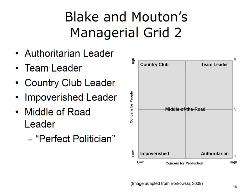In the very center of the grid, at a 5 on production and a 5 on people, we find the middle-of-the-road leader. The individual who demonstrates this leadership style will balance the concern for task and the concern for people in a fashion that improves morale, productivity, and increases satisfaction among the group members. This type of leader will often be viewed as the perfect politician for their ability to adapt to the various situational factors that may be encountered.